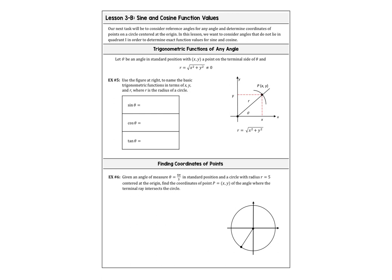What we're going to do now is include reference angles. Reference angles are those little acute angles that lie between the terminal side of an angle and the closest horizontal axis. We're going to figure out points on a circle centered at the origin, and we want to focus today on angles that do not lie in quadrant 1, in order to determine exact function values for sine and cosine.